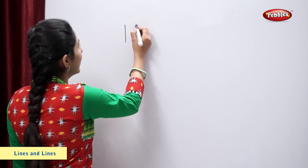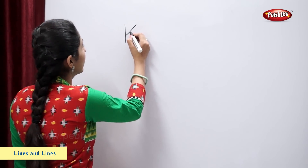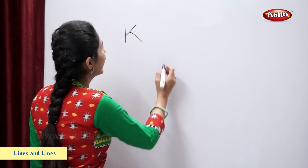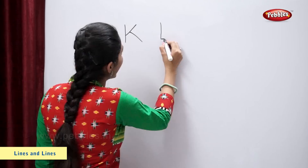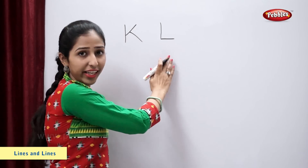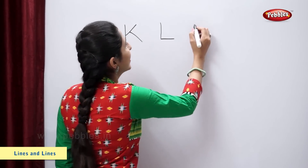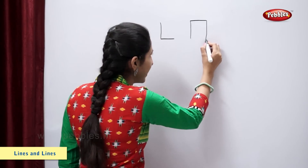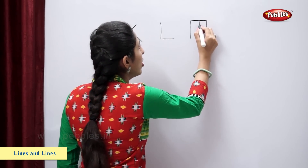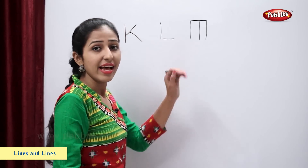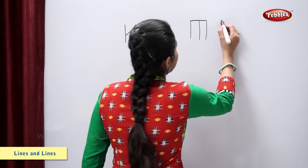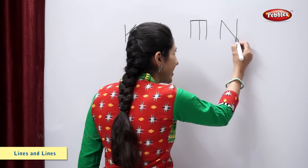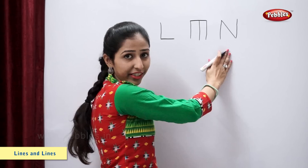Standing line, a slanting line. A slanting line — letter K. Standing line, a slanting line. One more standing line — letter N.